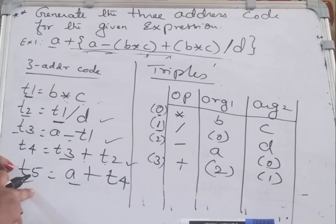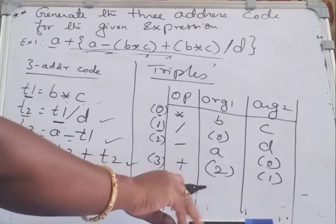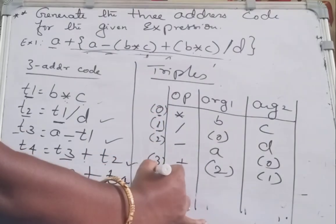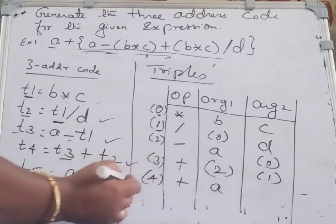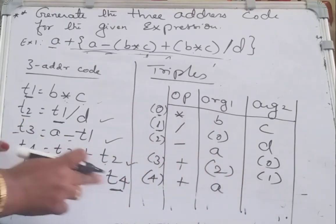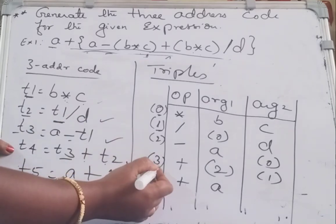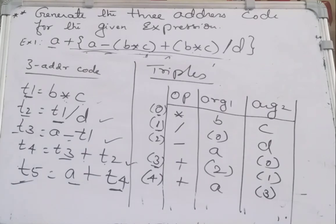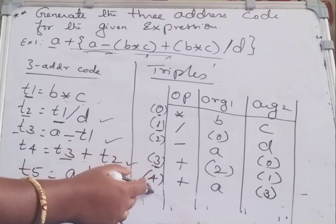Go to the next instruction — that is T5. T5 = A + T4. The operator is plus. The fifth instruction: argument one is A — write it as is. Argument two is T4 — what is the address of T4? T4's address is 3, so write 3 here. This is the triple representation of this given three address code instruction.